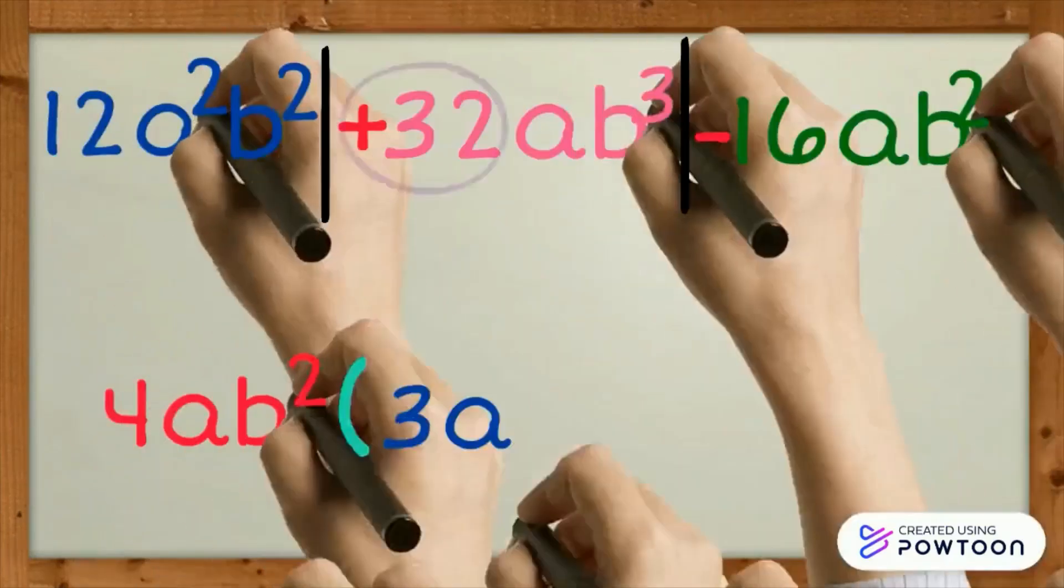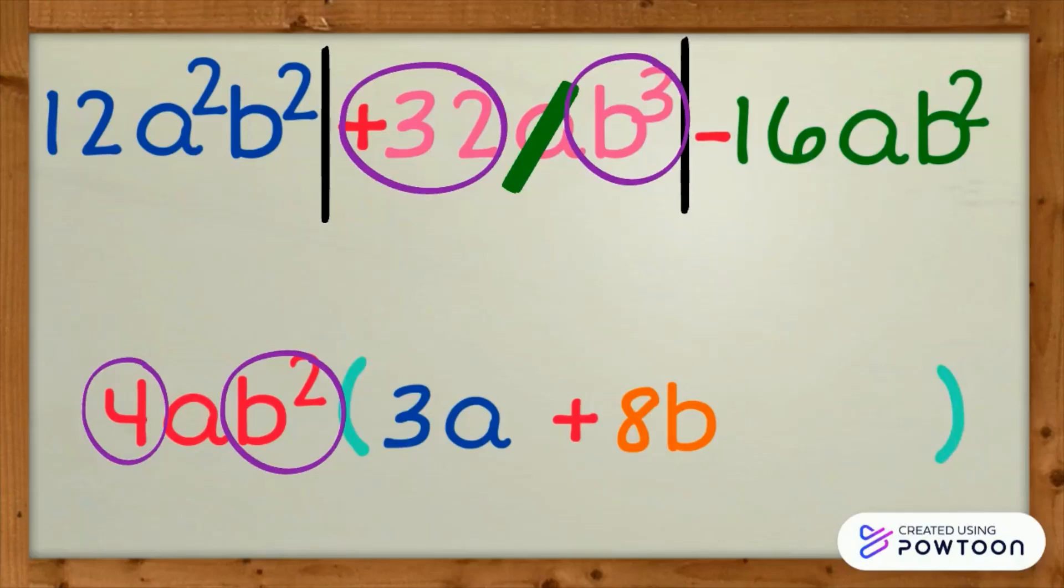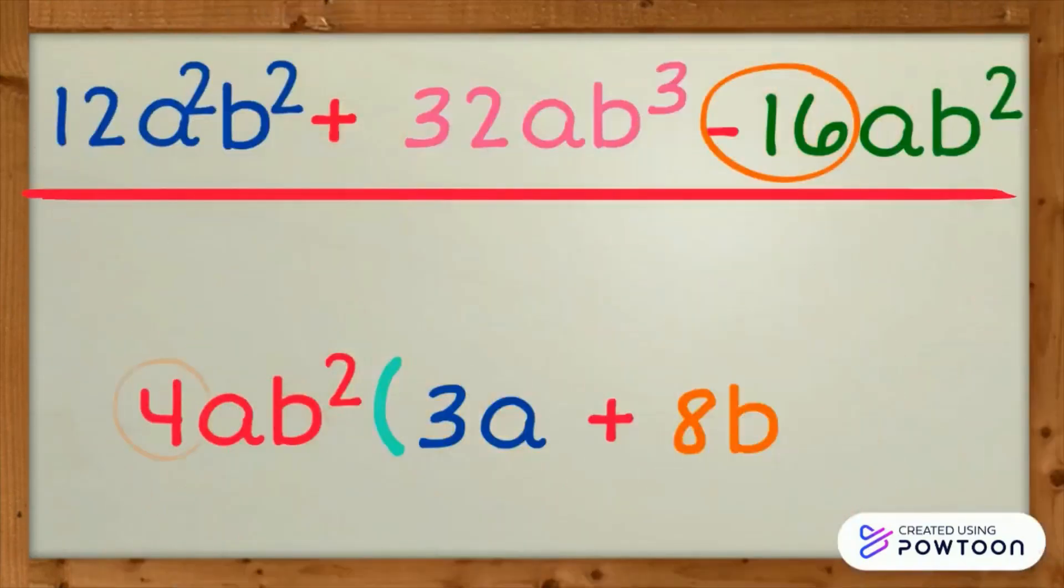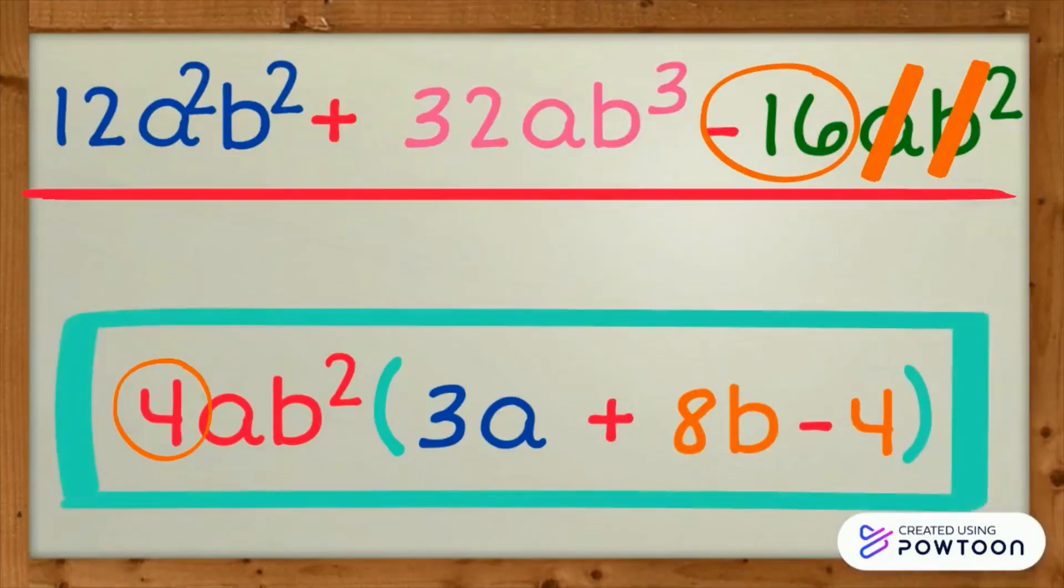32 by 4 is 8. A is cancelled. B cubed by B squared is B. Negative 16 divided by 4 is negative 4. A is cancelled. B squared is cancelled too. The final answer is 4ab squared quantity 3a plus 8b minus 4.